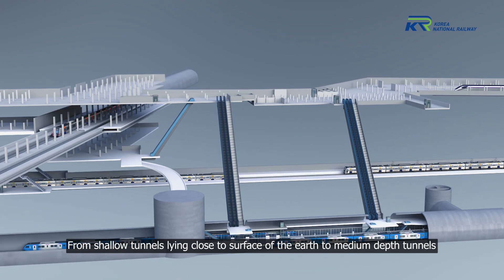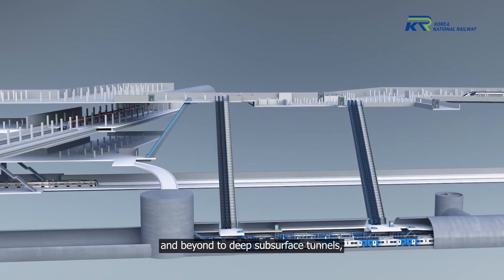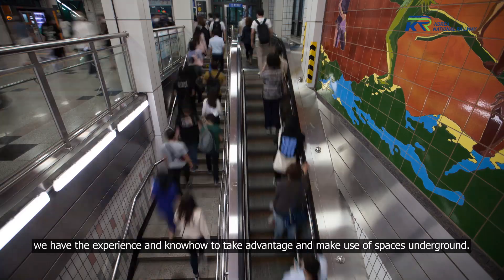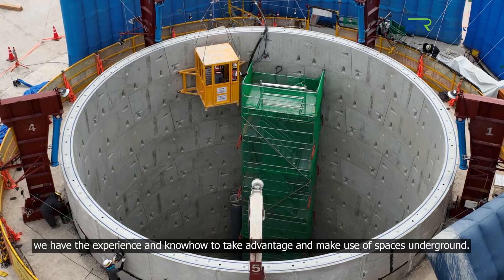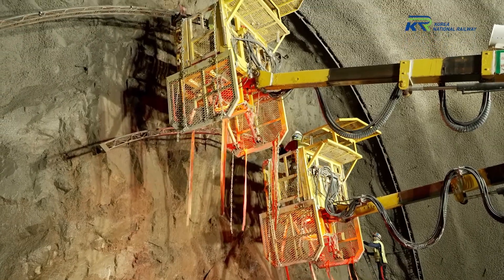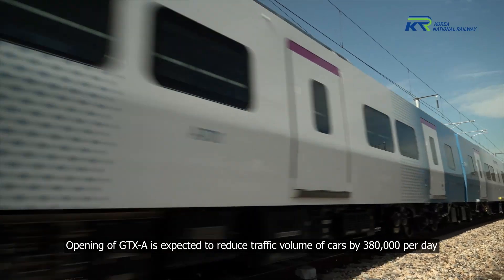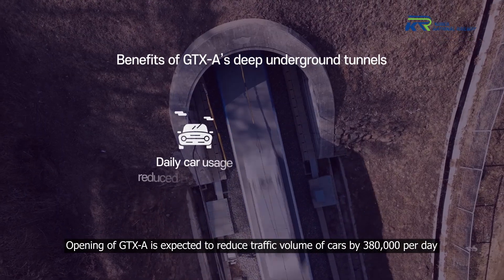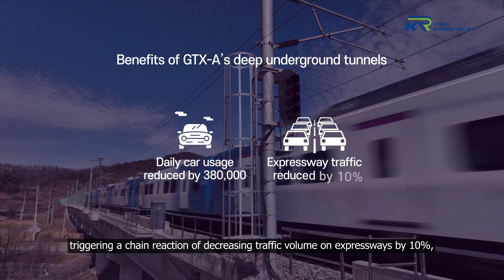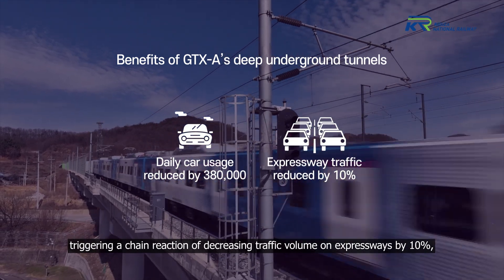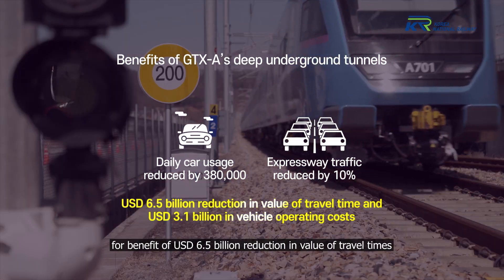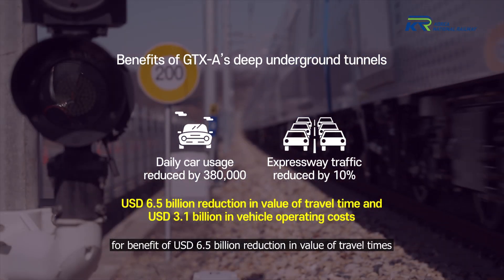From shallow tunnels lying close to the surface, to medium-depth tunnels and beyond to deep subsurface tunnels, we have the experience and know-how to take advantage of underground spaces. Opening of GTX-A is expected to reduce traffic volume by 380,000 cars per day, triggering a chain reaction of decreasing expressway traffic by 10%, with a benefit of 6.5 billion US dollars in reduced travel times.